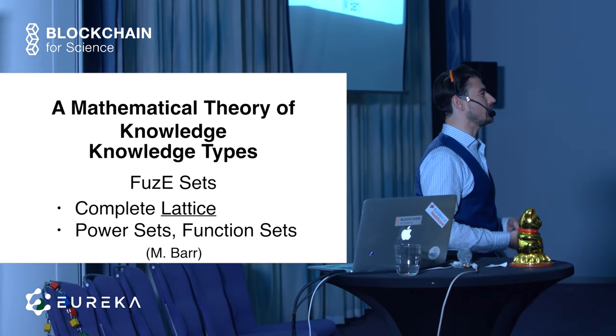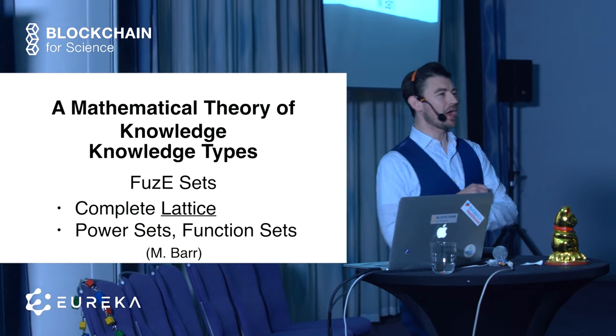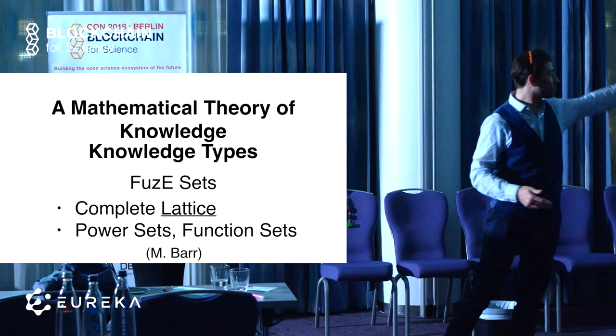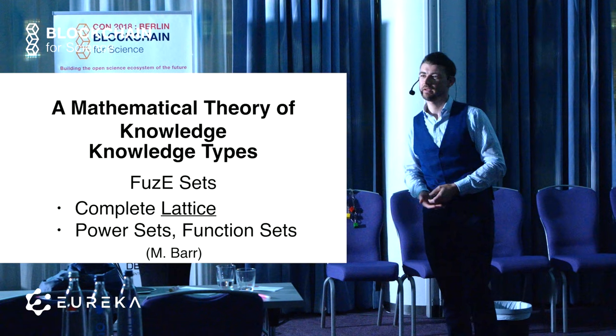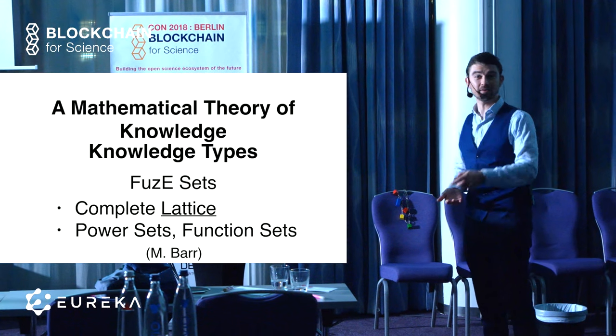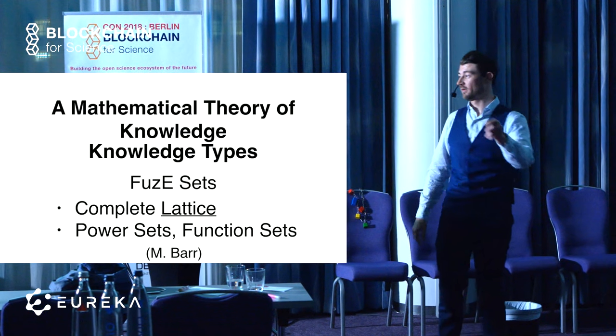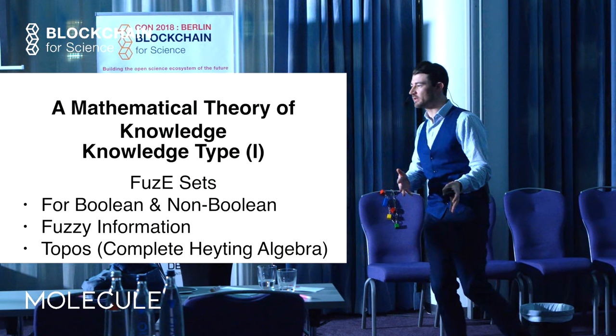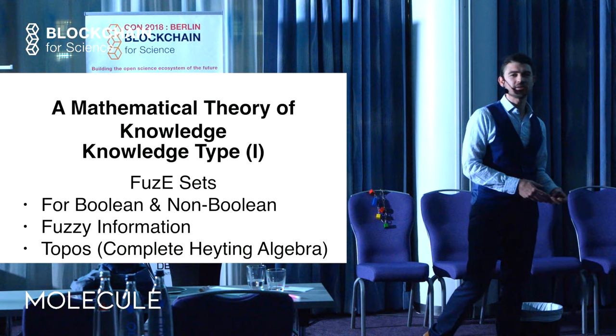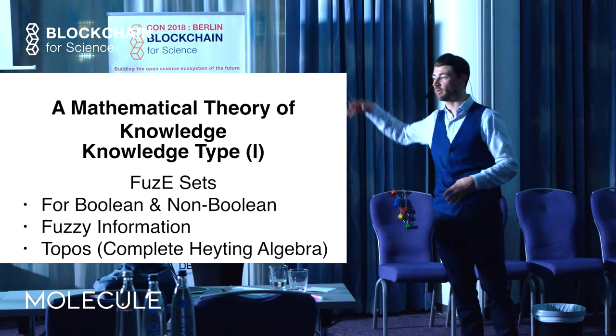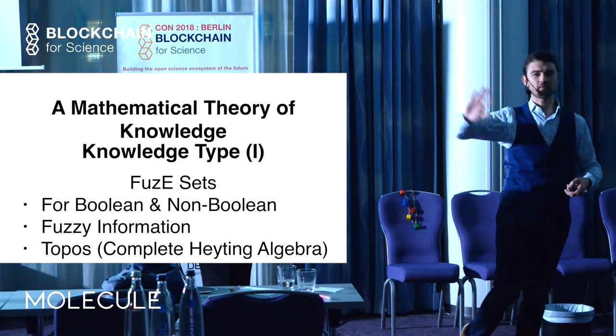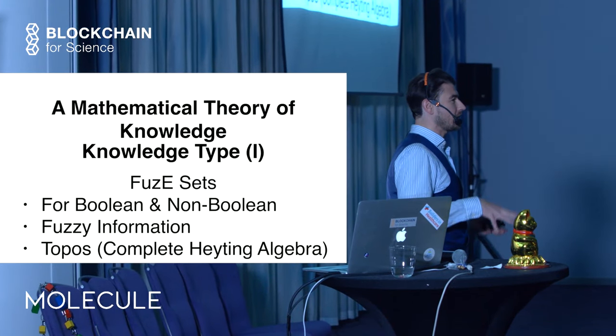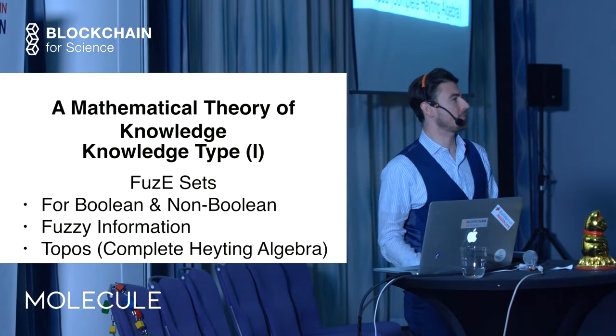Now, why is that cool? Well, it forms a complete lattice. Remember that? Lattice. Hopefully. And the cool thing about this is you can do power sets and function sets, and you can do everything of an intuitionistic logic. So that's really, really great. And this was proven by Michael Barr. Shout out to that guy. He's amazing. That guy did some really good. He's still alive, by the way. Eighty-one years old.